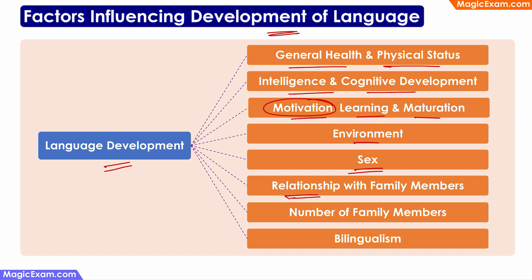Relationship with family members is also very important because one of the first sources where children learn language is through their interaction with the family members. So the relationship with the immediate family members matters a lot. Number of family members also matters because the more number of people children are interacting with, the better their language development.